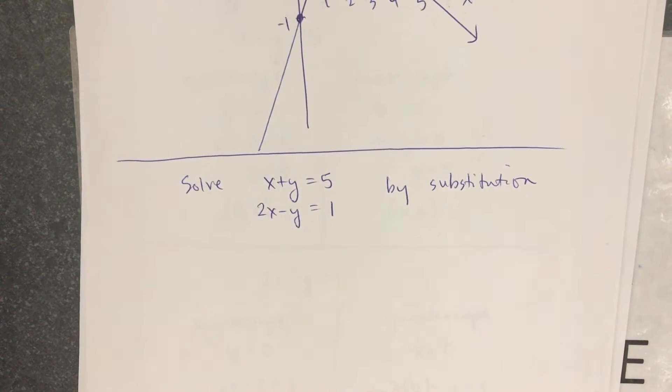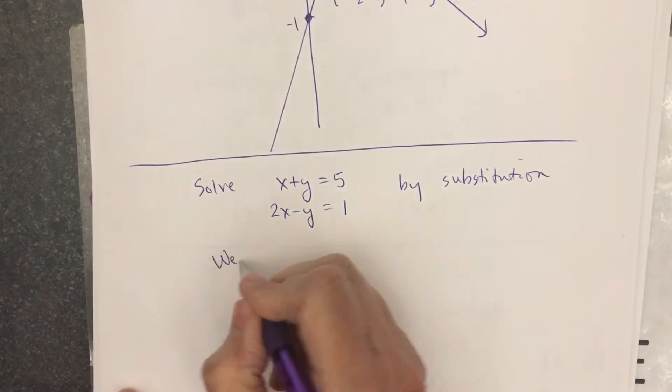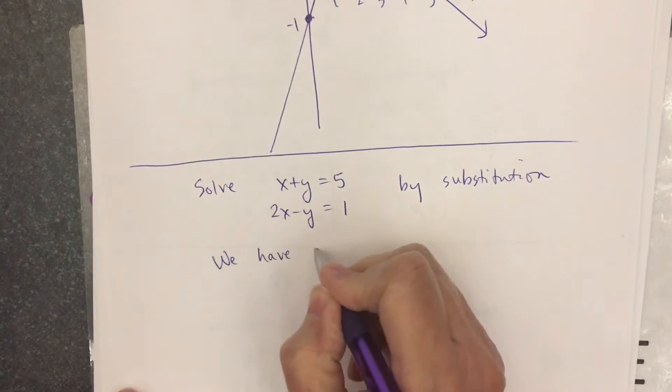If I'm going to solve a problem by substitution, you have a lot of choices. You have a lot of choices on things to do first, and they are all correct. Let me write that. We have choices.